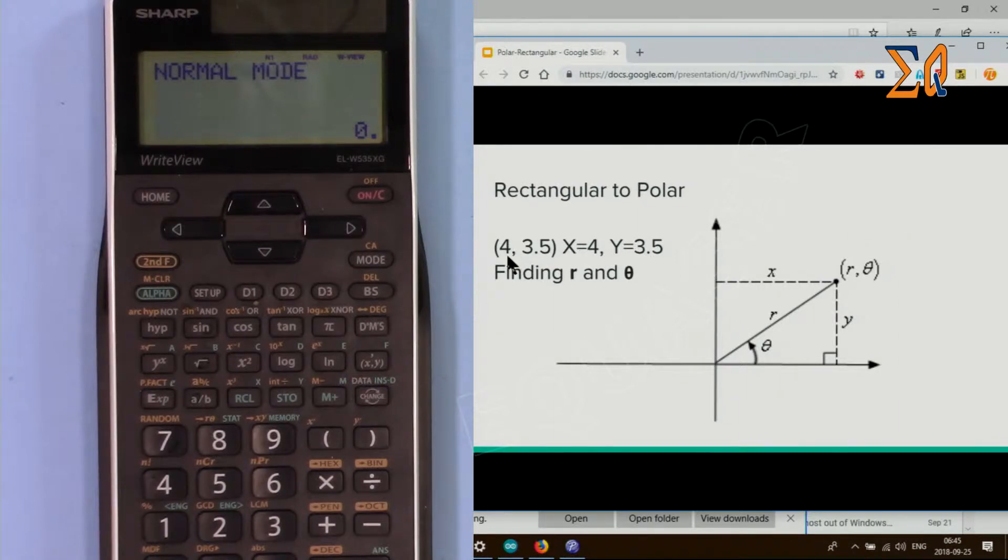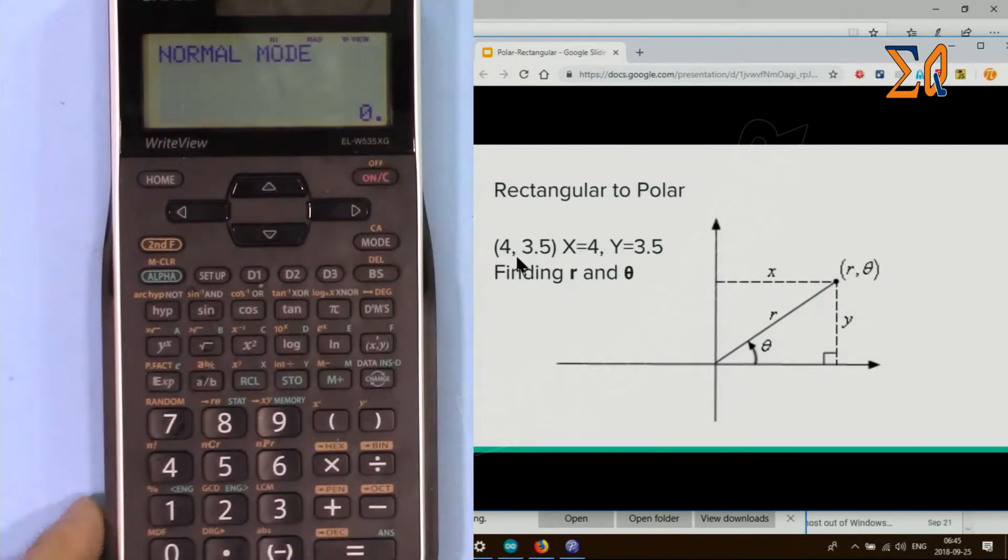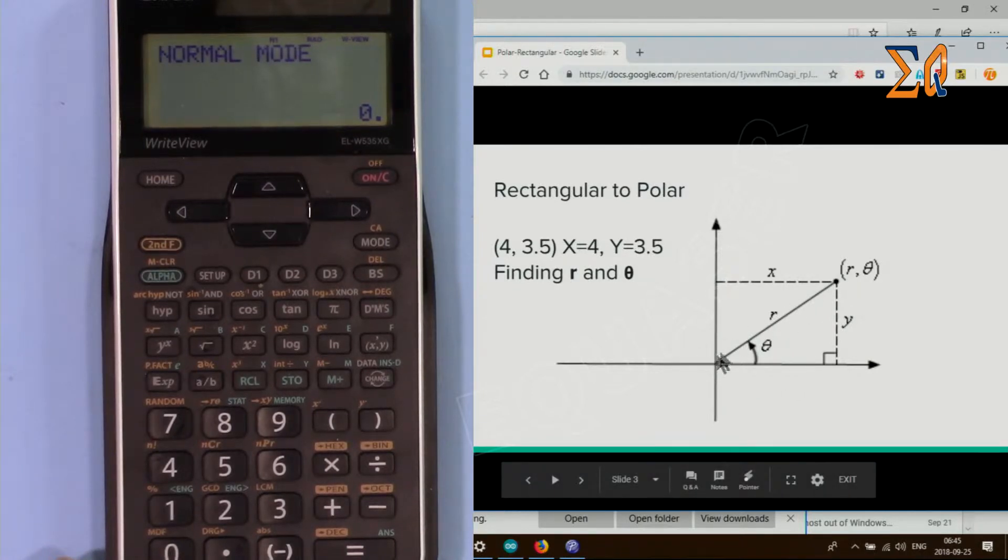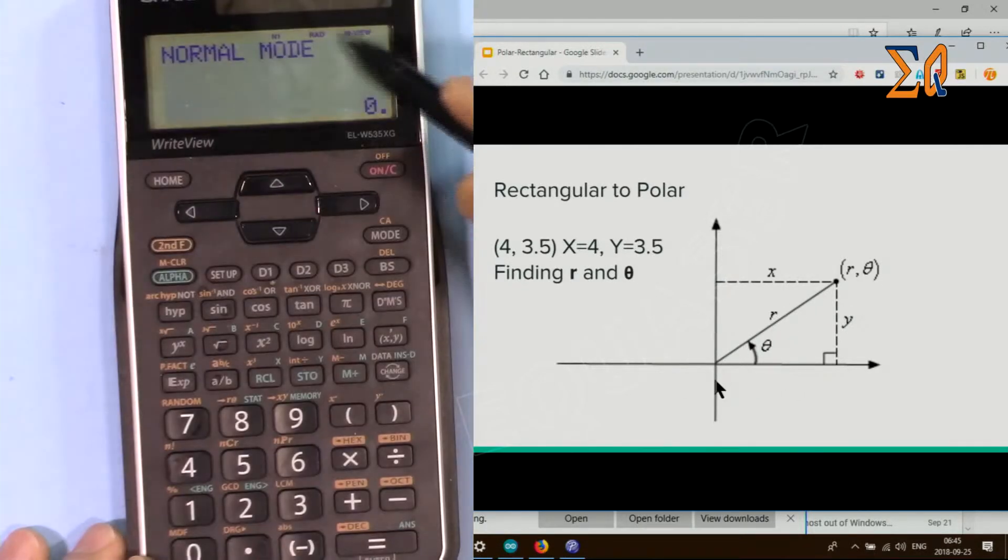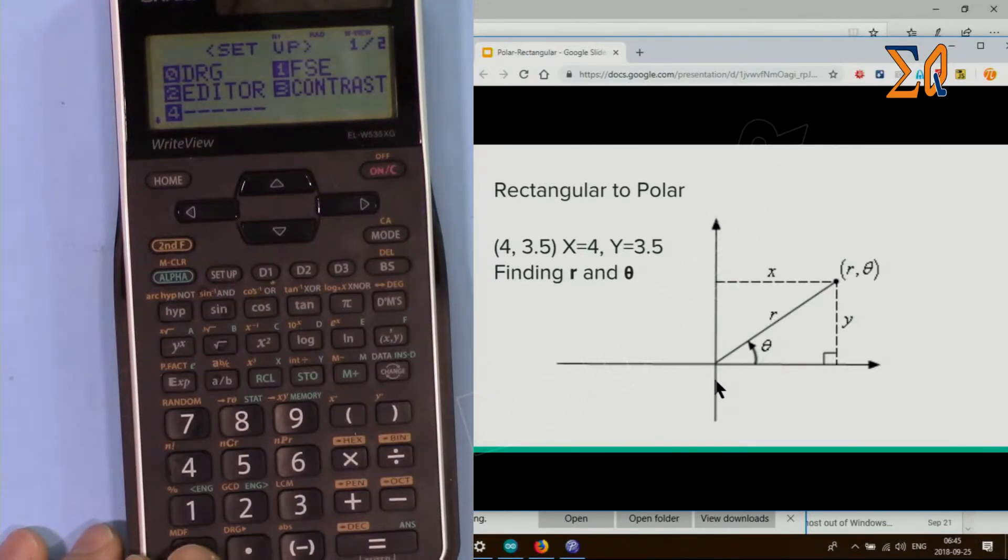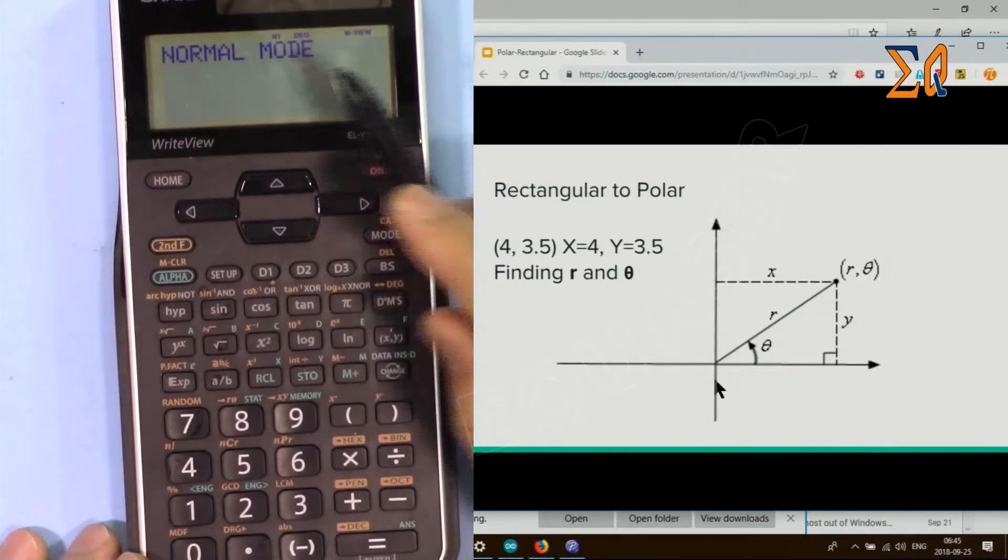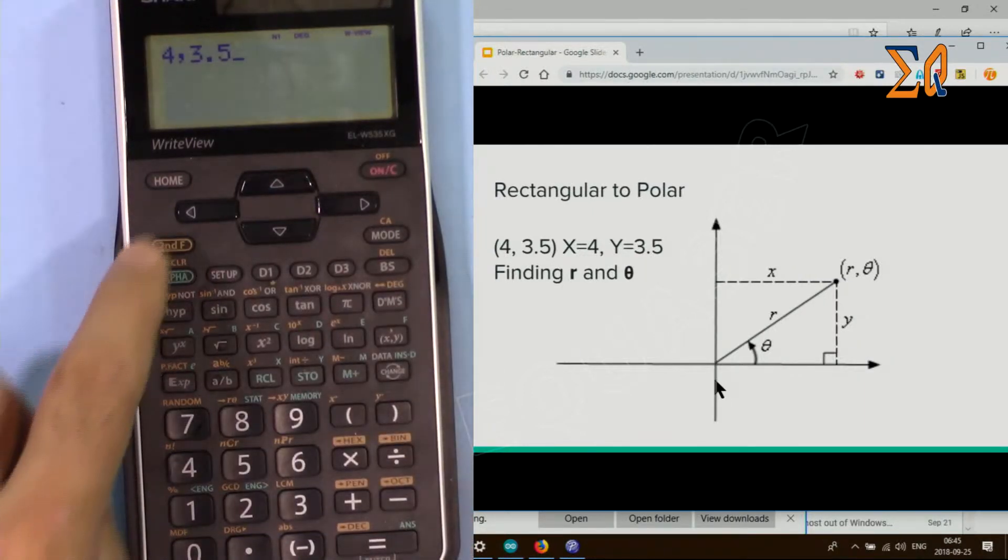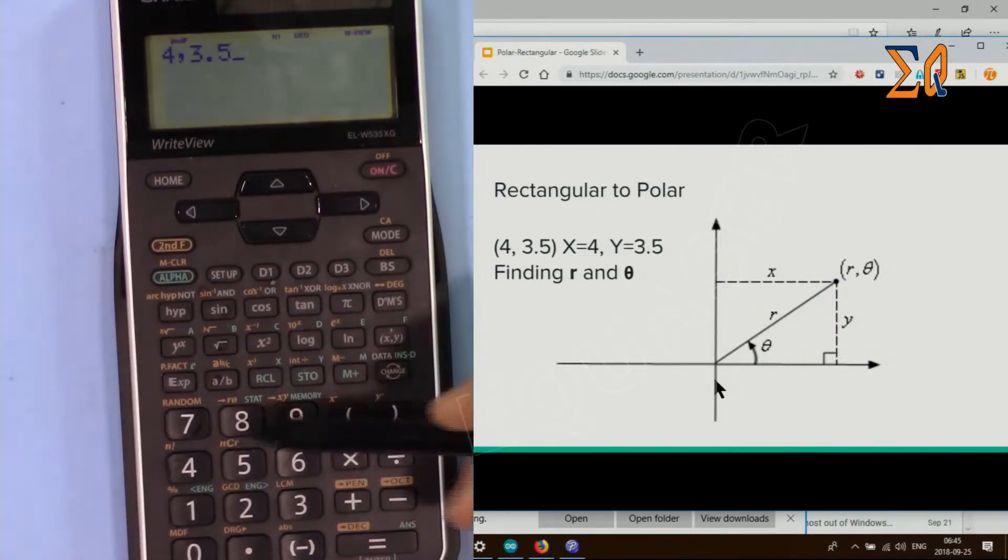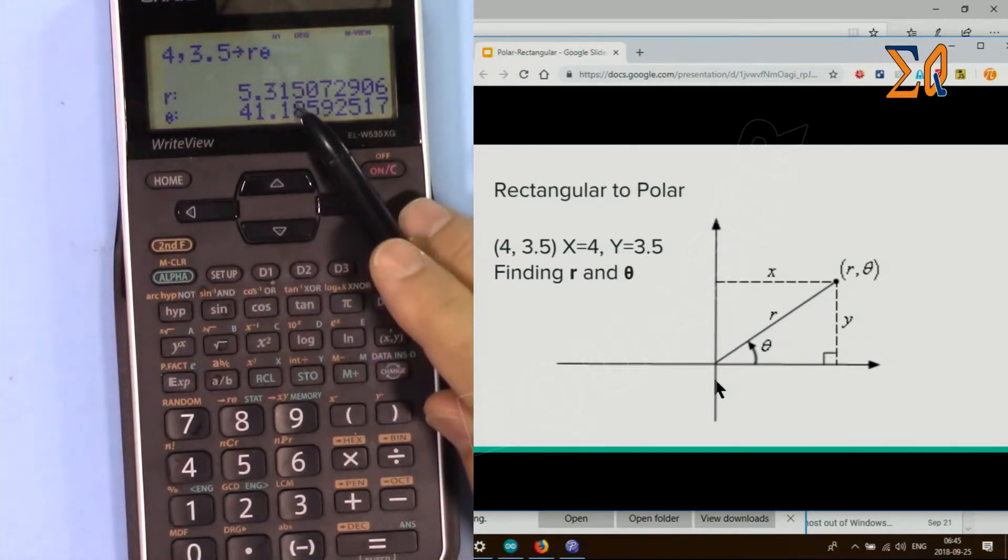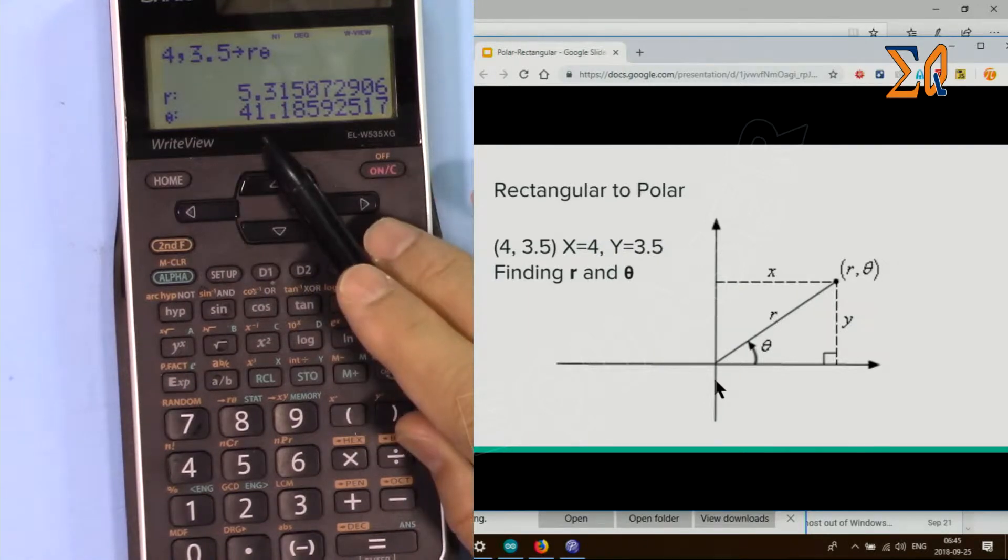We're converting it to polar. So we have X and Y, and from this point we want to find the magnitude and angle. Press Setup, then press zero for DRG, then zero for degree. Now we're in degree mode. Enter 4 comma 3.5, then press second function and 8 for R and theta. Now it shows R is 5.31 and theta is 41.1.